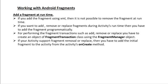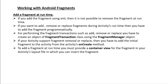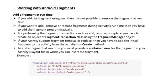If your activity supports fragment removal or replace, you have to add the initial fragment to the activity from the activity's onCreate method. To add a fragment at runtime, you must provide a container view for the fragment in your activity's layout file in which you can insert the fragment. If you want to add, remove, or replace a fragment at runtime, you must specify a container view — for example, a FrameLayout — with an id in your layout file.